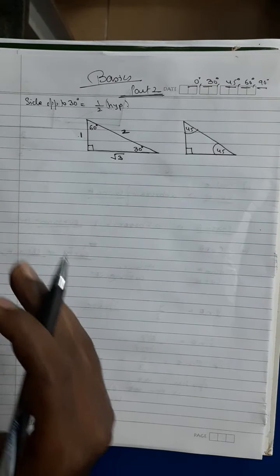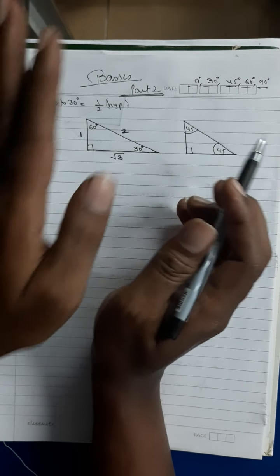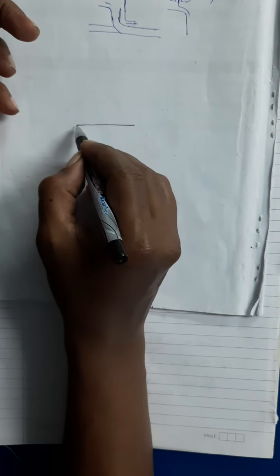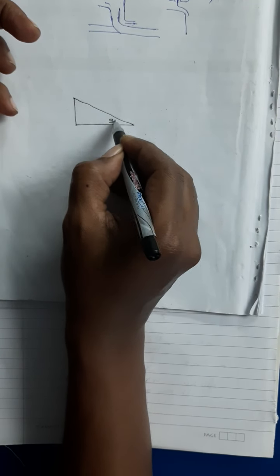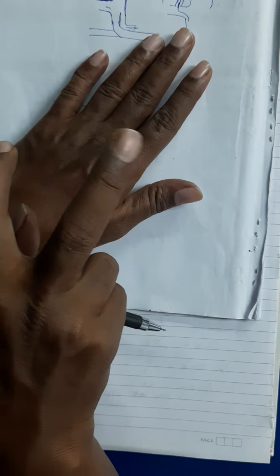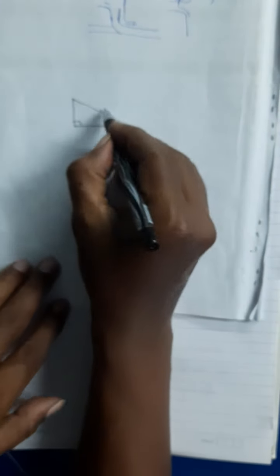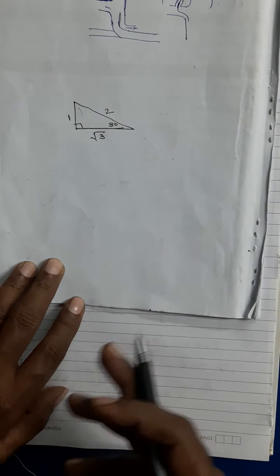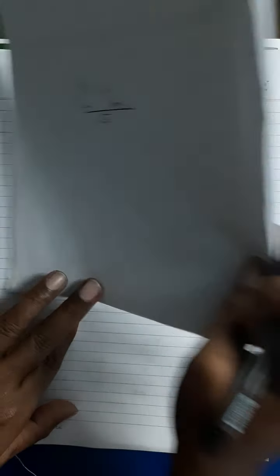This is the 30-60-90 degree triangle you have to remember: hypotenuse = 2, side opposite 30° = 1, and base opposite 60° = √3. If you forget this, you can always apply Pythagoras theorem to calculate it. But as we go forward, these things will be fixed in your mind — you just have to practice.